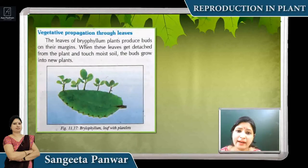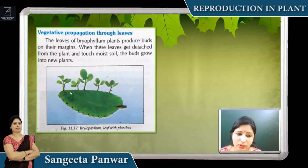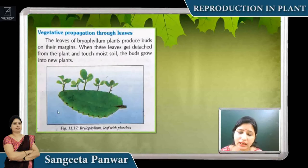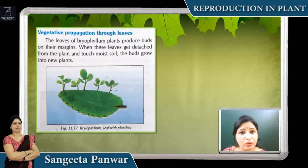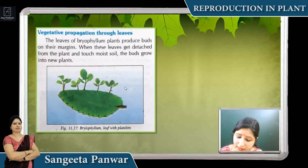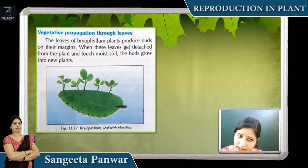You all know that the leaves of Bryophyllum — also called patthar chatta — produce new buds from the margins of the leaf. From each groove, new buds emerge. If they become detached from the main plant and fall onto the soil separately, then from each groove, a new shoot develops, and the plant is capable of growing into a new plant. Remember that in Bryophyllum, vegetative propagation occurs by the leaves.